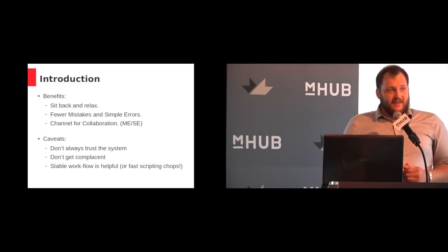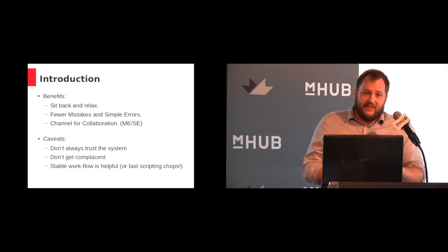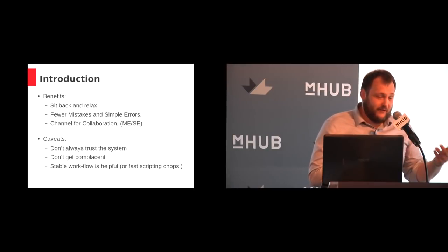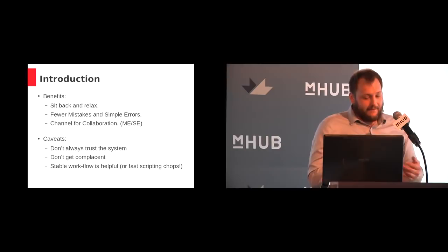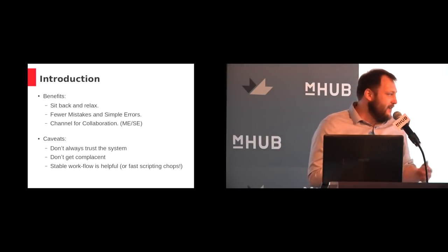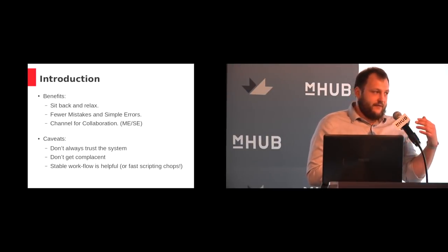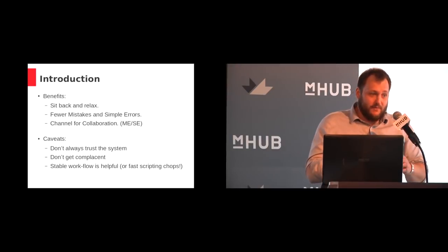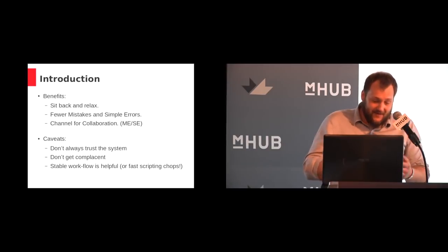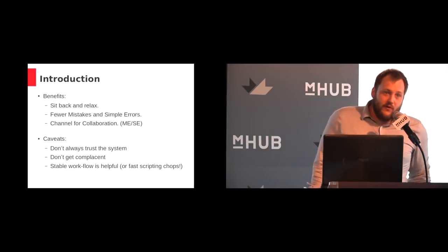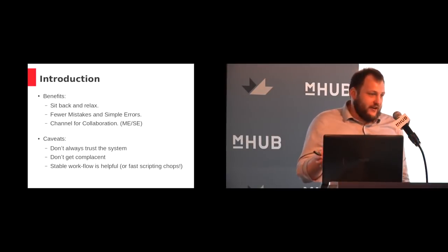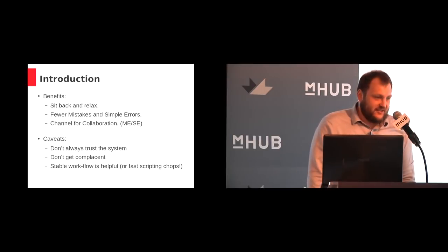What are the caveats? Don't always trust the system. When you automate things, you can forget about them — occasionally you have to revisit. You should have a review process for your review process. Don't get complacent. If things need to change, go fix them. And if you need to make something happen quicker, don't bypass the system and do it manually — that's when mistakes get reintroduced. A stable workflow is helpful, but if you're good at scripting, you can accommodate workflow changes live.